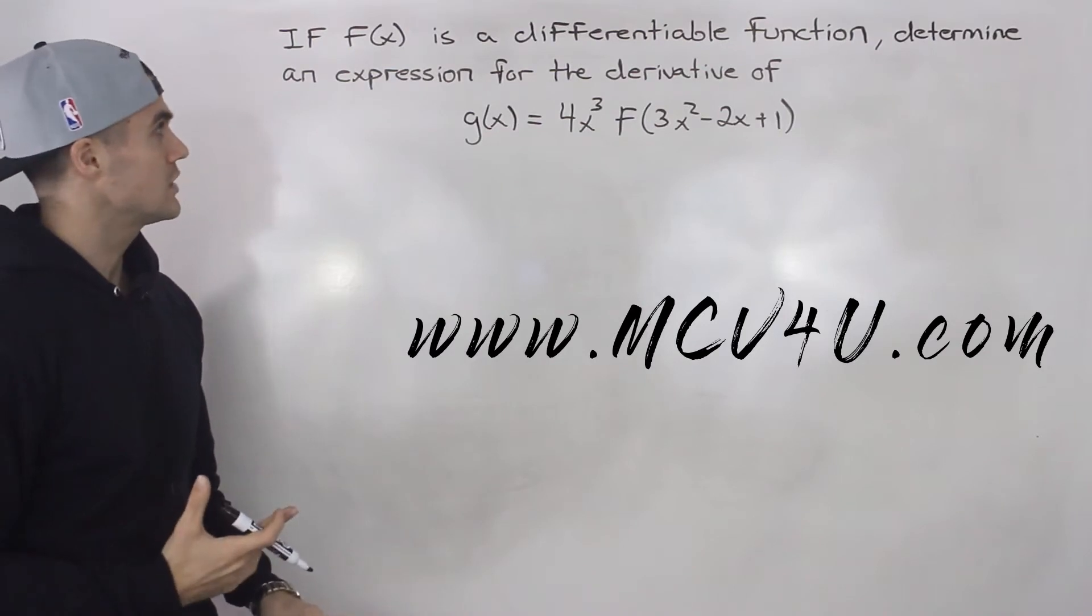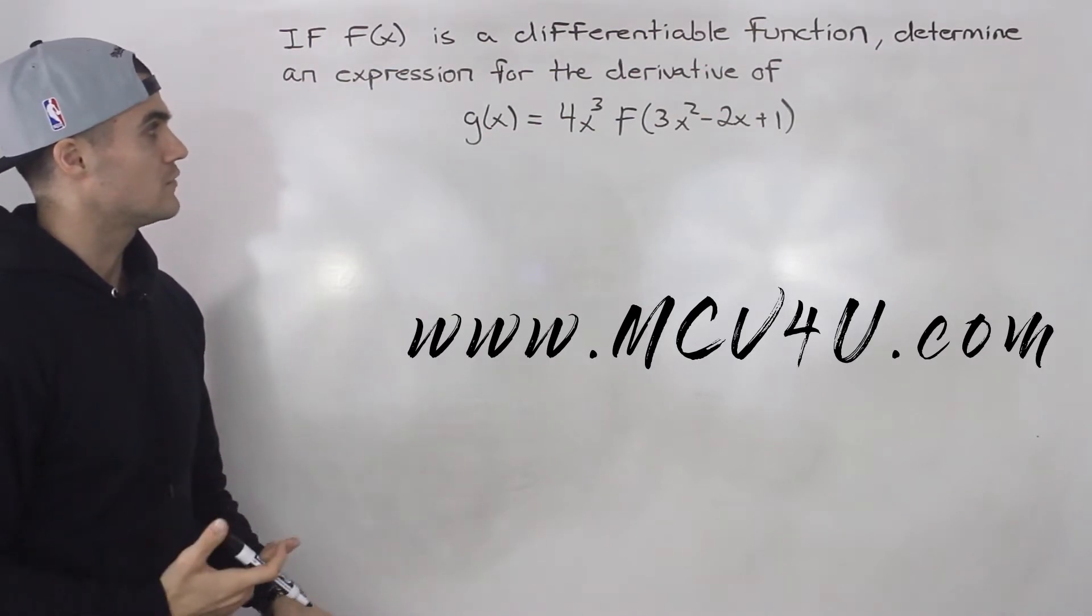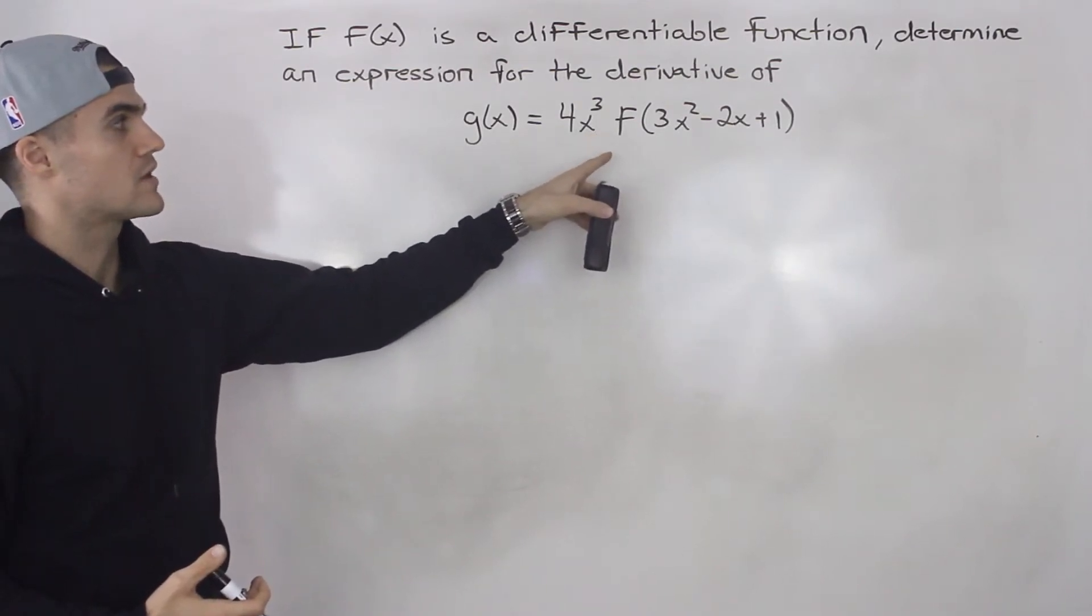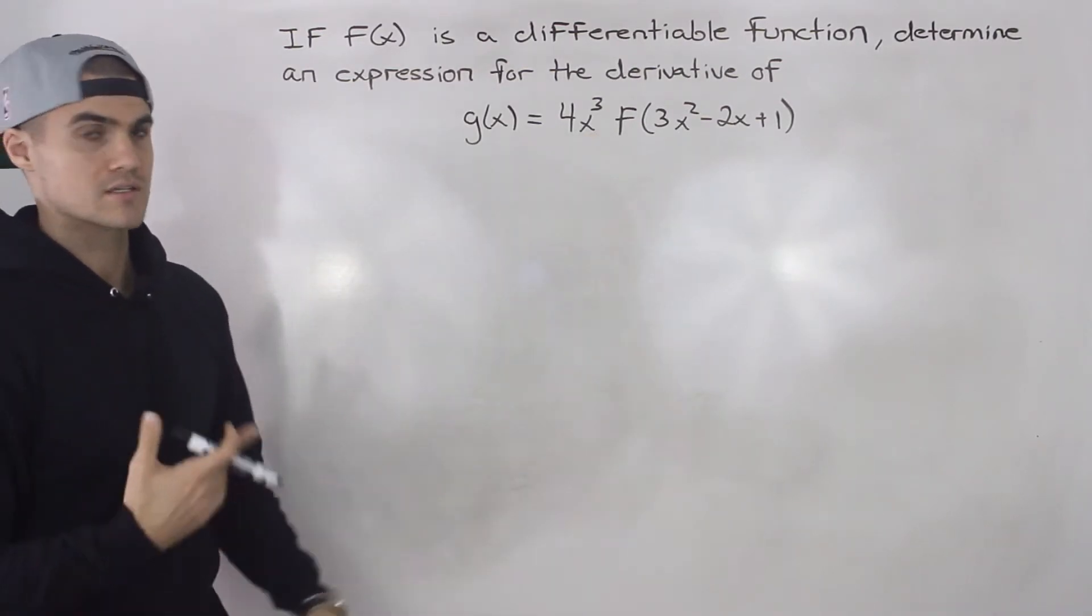If f(x) is a differentiable function, determine an expression for the derivative of g(x) equals 4x³ f of 3x² minus 2x plus 1.